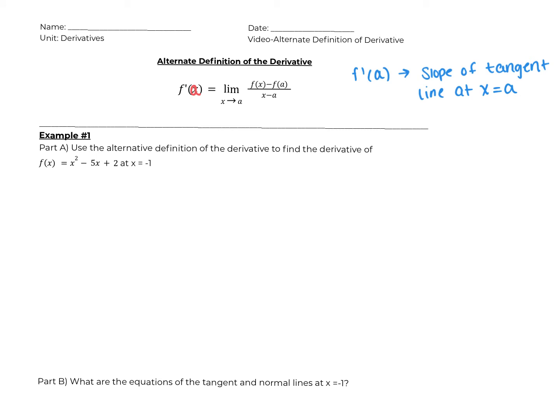Let's see how it works. We're going to use this alternate definition of the derivative to find the derivative of this function at x equals negative one — or in other words, the slope of the tangent line at x equals negative one.